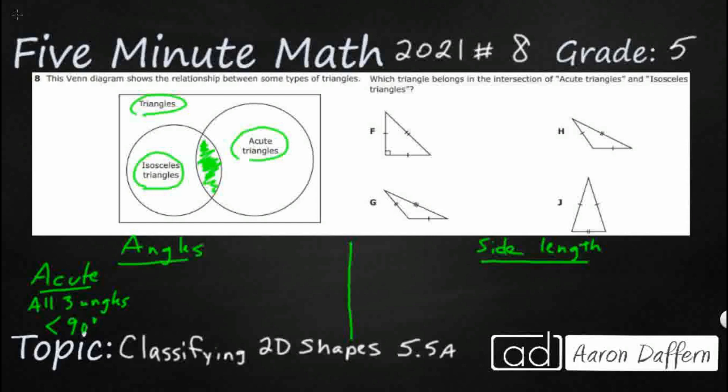So everything in our triangles kind of revolves around this 90 degree. So this is our 90 degree square corner perpendicular angle. So all three angles are less than 90.